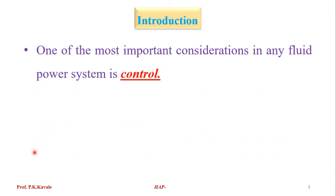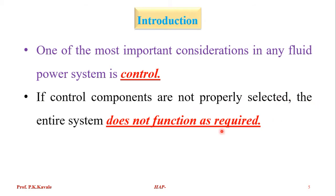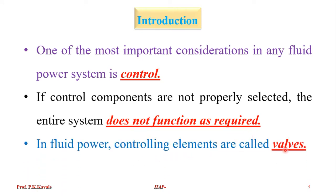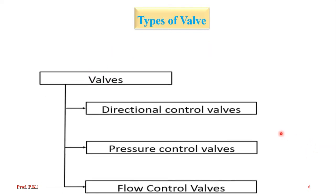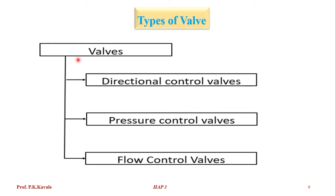One of the most important characteristics in a fluid power system is control. If control components are not properly selected, the entire system does not function as required. In fluid power, controlling elements are known as valves. There are three categories according to their functions: direction control valves, which control the direction of fluid through the circuits; pressure control valves, which control the pressure; and flow control valves, which control the flow.